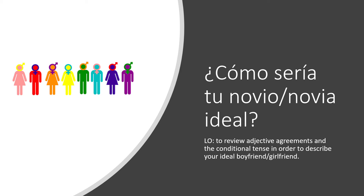Hi guys, here we are again, another Spanish lesson. Our title for today is ¿Cómo sería tu novio, tu novia ideal? This question translates to 'What would your ideal boyfriend be like?' or 'What would your ideal girlfriend be like?' The learning objective is to review adjective agreements and the conditional tense in order to describe your ideal boyfriend or girlfriend.